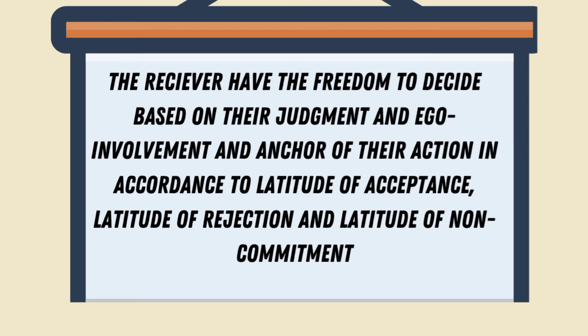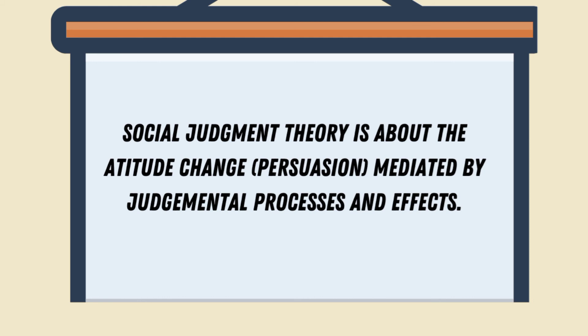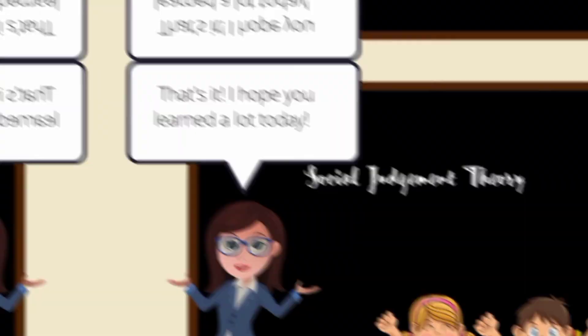To put it in a nutshell, Social Judgment Theory is about attitude change and persuasion, mediated by judgmental processes and effects. That's it. I hope you learned a lot today. Thank you for watching.